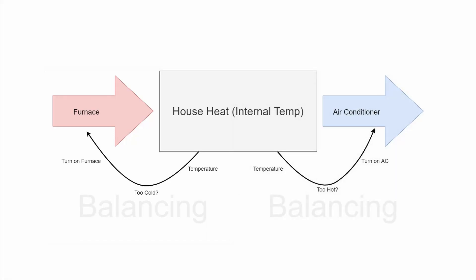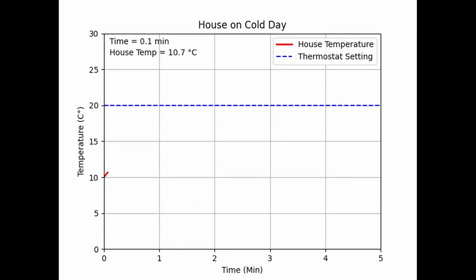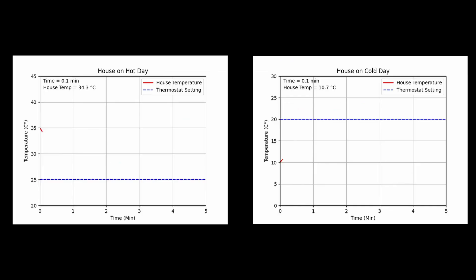Say you turn the system on on a hot summer day and the temperature in the house starts well above where it should be. The thermostat kicks the AC on and the temperature reduces, gradually approaching the optimal level. A similar behavior exists when you turn it on during a cold winter day. When looking at a graph of the stock level over time, you'll notice that it typically takes the form of an exponential decay function, and with only these two feedback loops affecting the stock, the system tends toward a dynamic equilibrium.